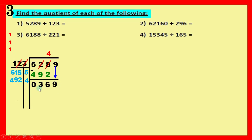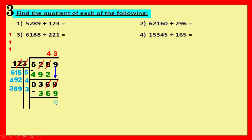Three hundred and sixty-nine is bigger than one hundred and twenty-three. Cover units and tens with units and tens — left with three and one. Three divided by one equals three. Try three in the margin: three times three equals nine, three times two equals six, three times one equals three — giving the same number, three hundred and sixty-nine. Three works. Write it above, answer below, draw line and minus: nine minus nine equals zero, six minus six equals zero, three minus three equals zero. The quotient is forty-three.